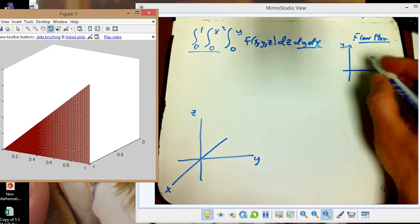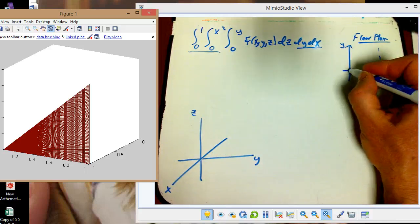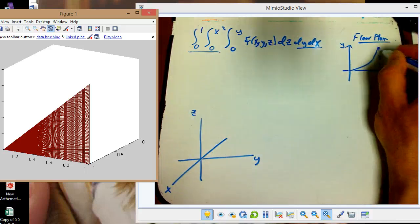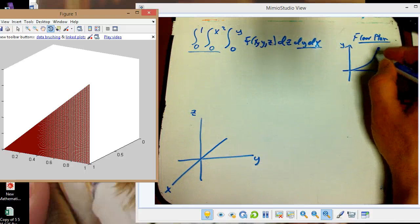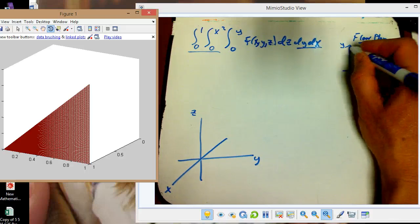So x is going from 0 to 1, and y is going from 0 to x squared. So it's a fairly standard example of a floor plan like this and it's sliced up in this way. And that's going up to 1.